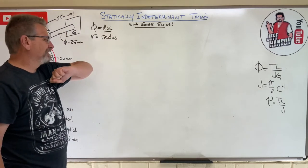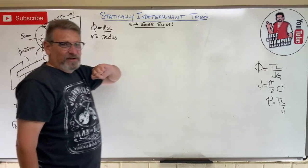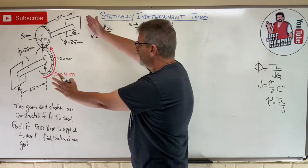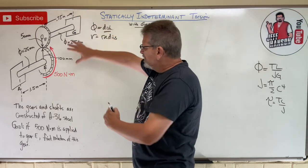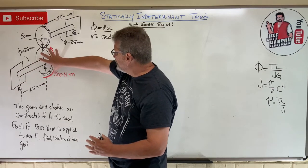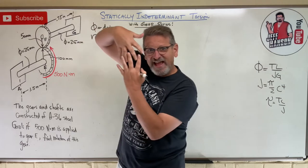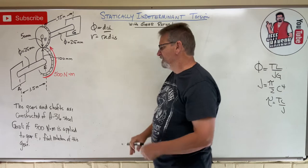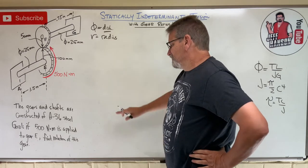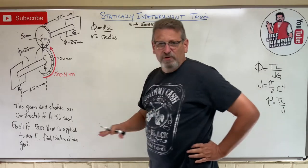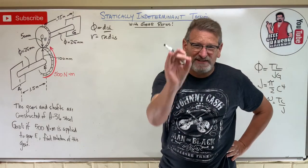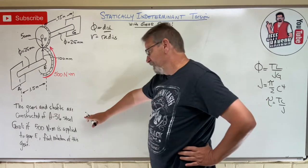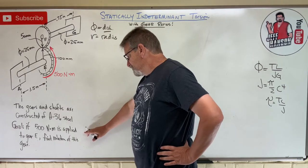We've got a statically indeterminate angle of twist problem. Typically that's when I have two things between two walls — a gear comes out attached to the end of a shaft, another gear engaging it with interlocked teeth, another shaft and another wall. The gears and shafts are constructed of A36 steel. Whenever they give you a specific material, that's your clue to look up a book value. 500 Newton-meters is applied to gear E.